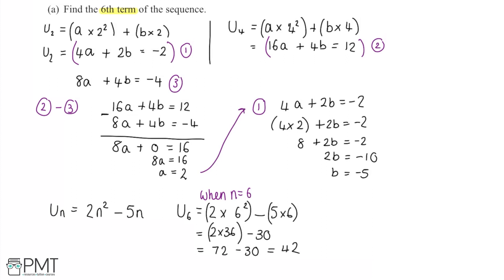As for the mark scheme: the first mark is for a process to find an equation in a and b by substituting in the value of u2 or u4. The second mark is for a process to solve the simultaneous equations. The third mark is for the correct values a equals 2 and b equals minus 5. The fourth and final mark is for the correct answer of 42.